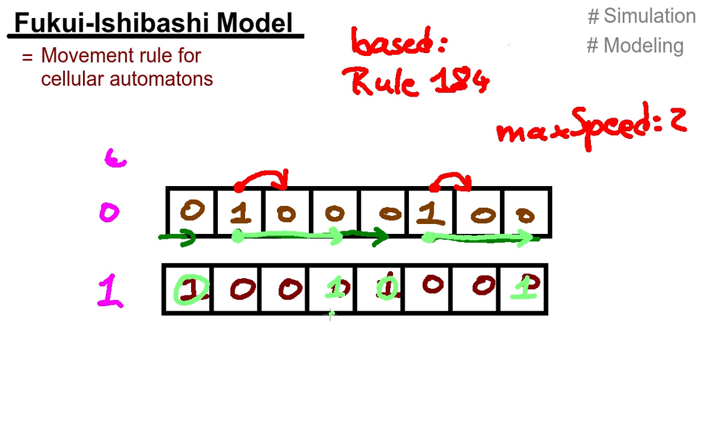And of course, in the next round, this goes here. And this goes until here. And, well, that's everything about the Fukui-Ishibashi model.